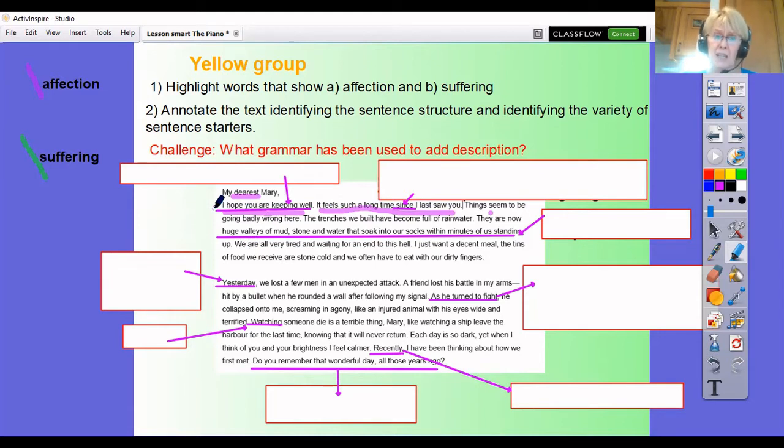Now I'm going to look a paragraph at a time so what I'm going to do now is I don't think I just have a quick look I don't think there's anything else that shows I care or have affection in this just in this first paragraph. No there isn't. So then I'm going to go to my green and look for things that are going to make life pretty uncomfortable to show that I'm suffering in pain or I feel uncomfortable. So things are going badly wrong here. All that shows that something's going wrong and if things are going badly wrong bearing in mind I'm in the trenches I'm going to be suffering aren't I? The trenches we built have become full of rain water, well that's going to cause suffering because if it's full of rain water and I'm living in them I'm going to get extremely wet. Oh look I've expanded on that with this sentence here, it says here that all the trenches have turned into valleys of mud stone and water that soak our socks within minutes of us standing up. So I'm sure that sometime in your life you've experienced wet socks and you know how uncomfortable they are and how they can rub on you and push your blisters or make your feet very very sore.